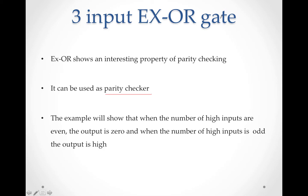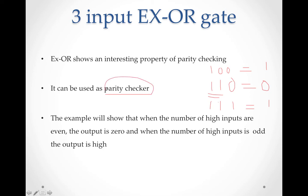So if the inputs have an even number of 1s, the output of the XOR gate is 0. If the inputs have an odd number of 1s, output is 1. This is the parity checker feature of XOR gate. Parity means checking the number of 1s - whether it is even or odd. By checking the final output, you can determine if the input had odd or even number of 1s.